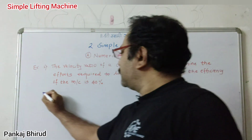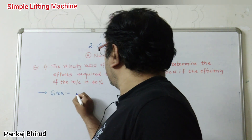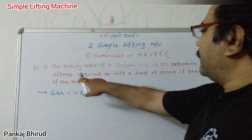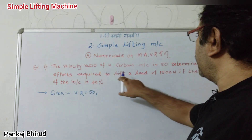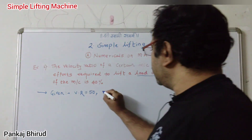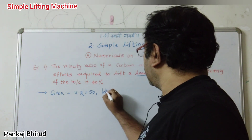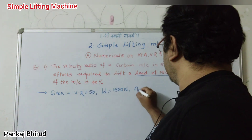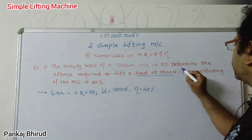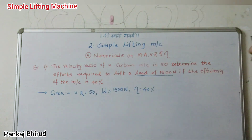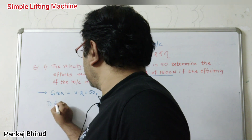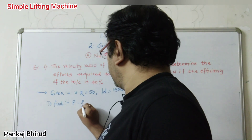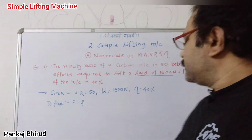In this example, the given data is: velocity ratio VR = 50, load W = 1500 Newton, efficiency = 40%, and we have to calculate the effort P required to lift the load of 1500 Newton.